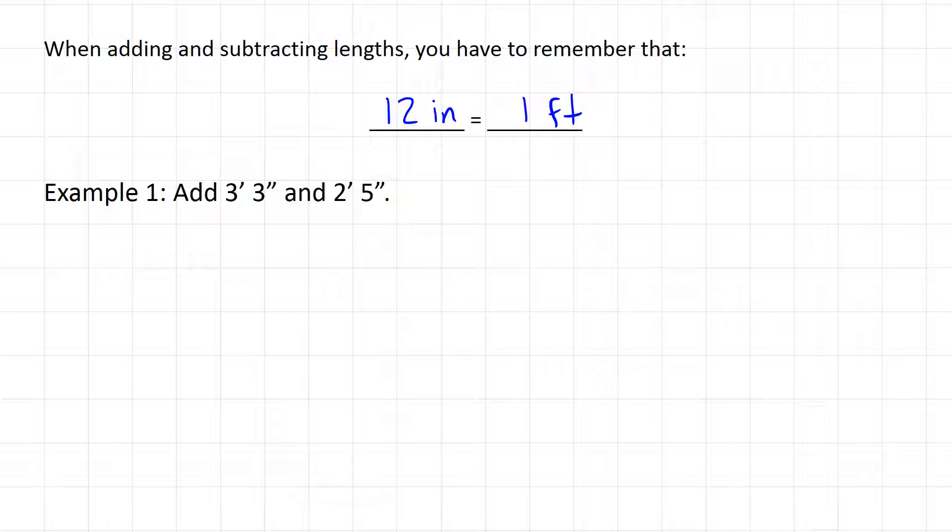of these measurements together. Let's add 3 feet 3 inches and 2 feet 5 inches. I'll write this out here: 3 feet 3 inches plus 2 feet 5 inches. All we're gonna try to do at the